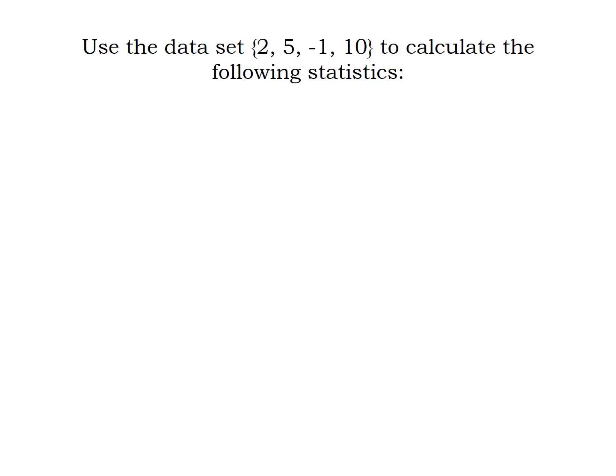For our first example we're going to use this small data set made up of the numbers 2, 5, negative 1, and 10. This is a sample taken from a larger population and we're going to learn how to calculate some basic descriptive statistics.